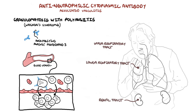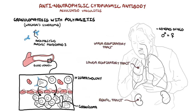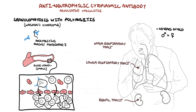This is the Wegener's triad: upper respiratory tract, lower respiratory tract, and renal tract involvement. Granulomatosis with polyangiitis is the most prevalent of the ANCA-associated vasculitides, with a mean age of onset of 40, but it can really occur at any age. It occurs in females and males equally. Histopathological findings include granuloma formation, as well as pauci-immune necrotizing vasculitis of the small arteries and small veins.